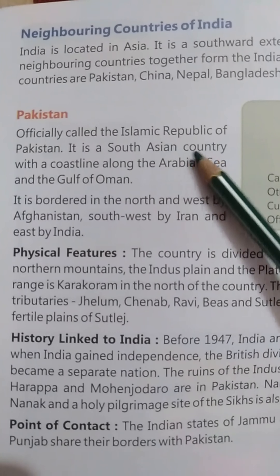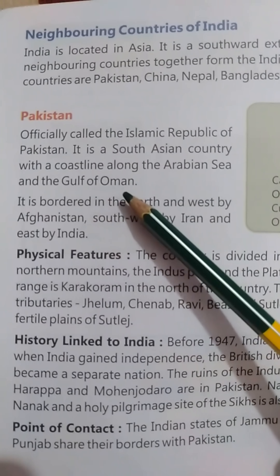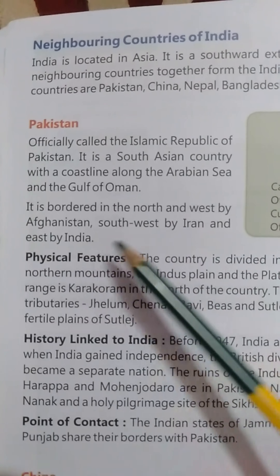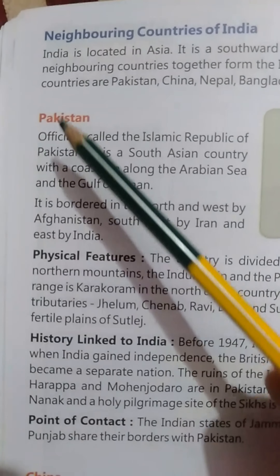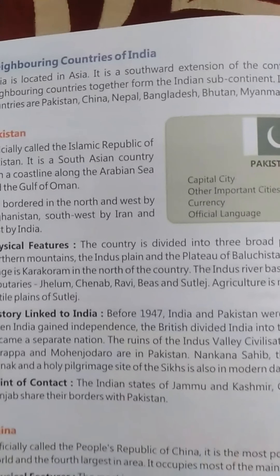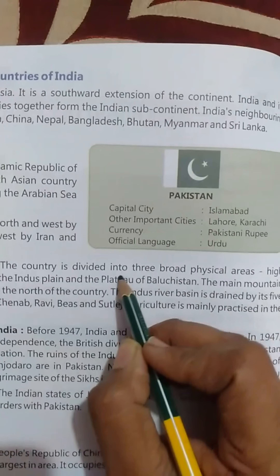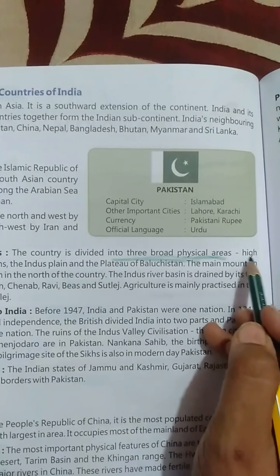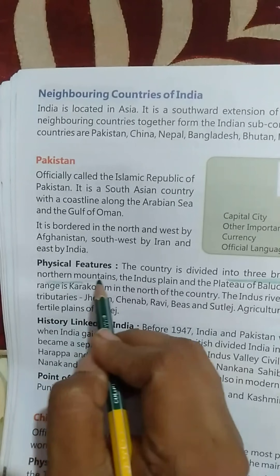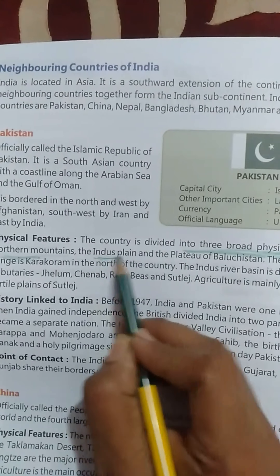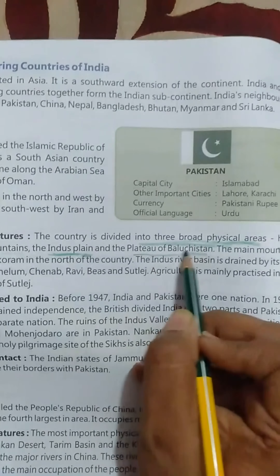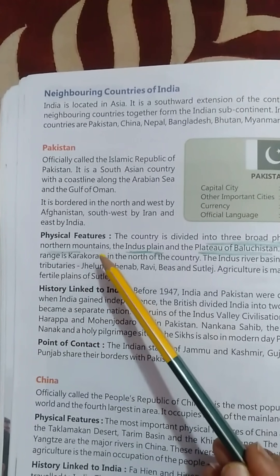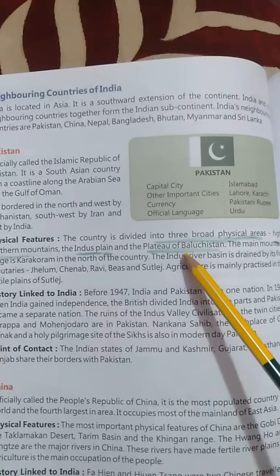It is a South Asian country with a coastline along the Arabian Sea and Gulf of Oman. It is bordered in the north and west by Afghanistan, southwest by Iran, and east by India. Now, physical features of Pakistan — please underline 'three broad physical areas,' this you have to remember. The country is divided into three broad physical areas: high northern mountains, the Indus plain, and the plateau of Balochistan.